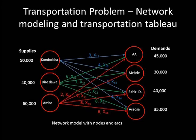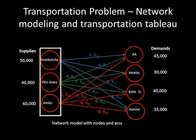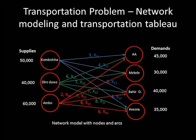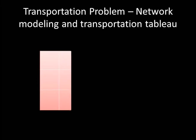This is the final network model with arcs and nodes. Once the network model is developed, it is simple to derive the transportation table from it. The number of sources equals the number of rows in the transportation table — since there are 3 sources, the table has 3 rows. The number of destinations equals the number of columns — so the table has 4 columns. Let's begin sketching the table by drawing a table with 3 rows and 4 columns.